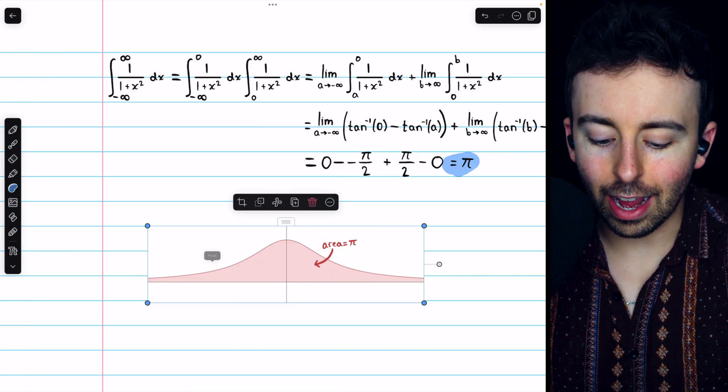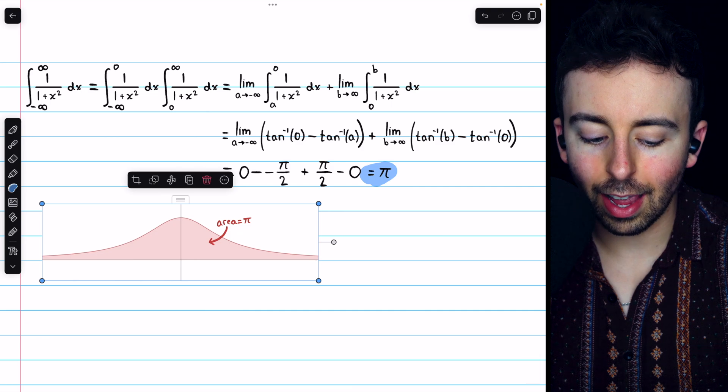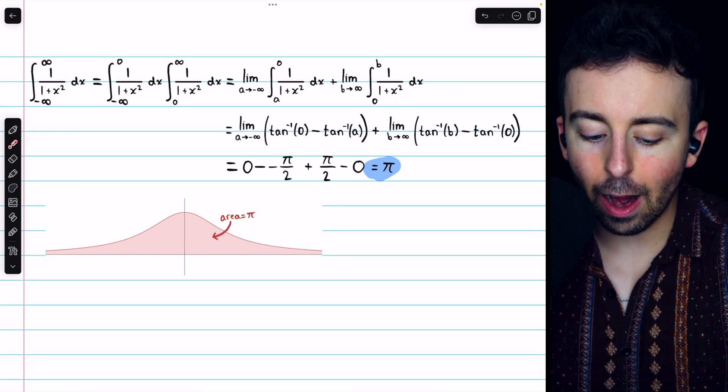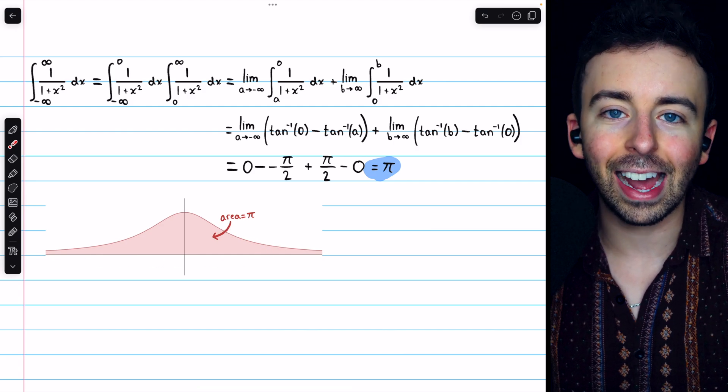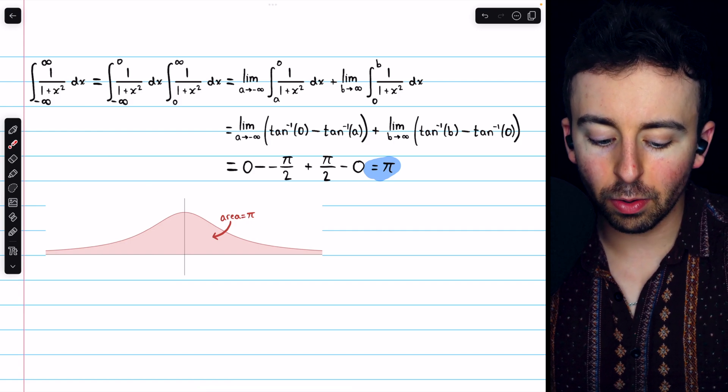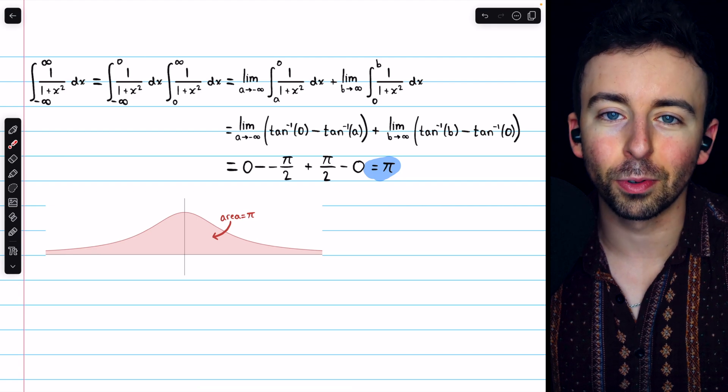We can look at this in a graph, as well. This is a graph of the function, 1 over 1 plus x squared. And this improper integral is all of the area underneath the graph, and of course, above the x-axis, because this function only outputs positive values. So, this area underneath that curve is equal to pi, which is pretty cool.